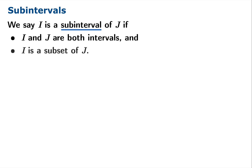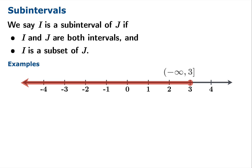Let's talk about subintervals. It's an easy idea. We say I is a subinterval of J if I and J are both intervals and I is a subset of J. We'll look at a few examples and this notion should be pretty clear. We could start with the interval from negative infinity to 3, and here's an interval negative 1 to 3 not including 3. That's a subinterval of the original interval. Every element of the yellow interval is an element of the red interval, so it is a subinterval.